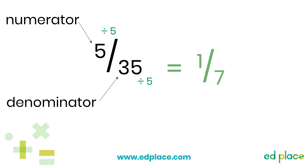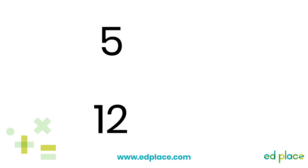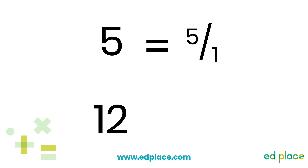One-seventh is still the same value as five thirty-fifths. Something else that will help us with today's lesson is knowing that any whole number can also be written as a fraction — you just put the whole number as the numerator and the denominator would be one. For example, five is the same as five over one, and twelve is the same as twelve over one. You can do this with any whole number.